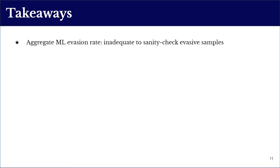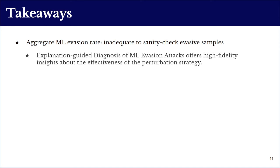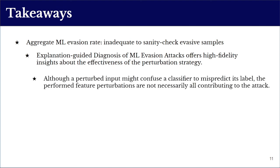We believe this observation can be explained by the limitations of currently introduced machine learning explanation methods in terms of their accuracy and stability. In summary, this work reveals that aggregate evasion rate is not enough to evaluate the effectiveness of a machine learning evasion strategy — deeper diagnosis are mandatory to offer high-fidelity insights at the feature level. Furthermore, although a perturbed input might confuse a classifier to mispredict its label, the performed feature perturbations are not necessarily all correlated to the attack.